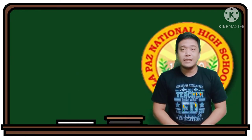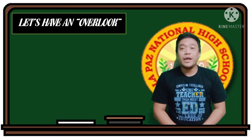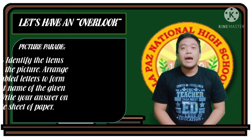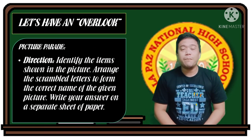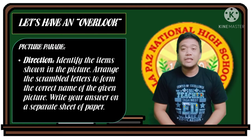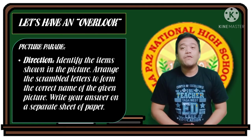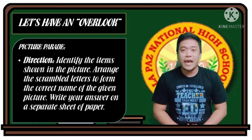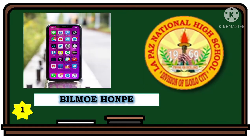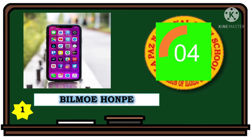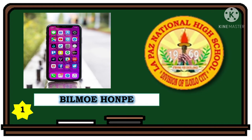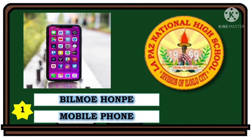Before we start our lesson, let's have an activity — Picture Parade. Direction: Identify the items shown in the picture. Arrange the scrambled letters to form the correct name of the given picture. Write your answer on a separate sheet of paper. We have only 5 seconds to know the answer. Picture number 1 — the correct answer is mobile phone.